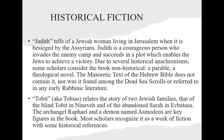Interestingly, Tobit features an archangel called Raphael, who I believe is one of the seven archangels. He's not mentioned in canonical Scripture — canonical Scripture only mentions Gabriel and Michael — but we find mention of Raphael in this book.